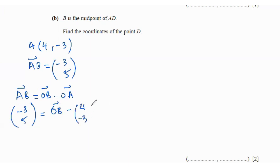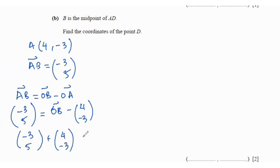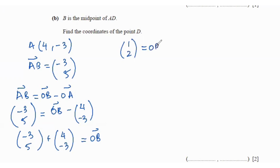AB equals OB minus OA, so (-3, 5) = OB minus (4, -3). Therefore OB = (-3, 5) plus (4, -3), which gives (-3 + 4, 5 - 3) = (1, 2). So OB is (1, 2).